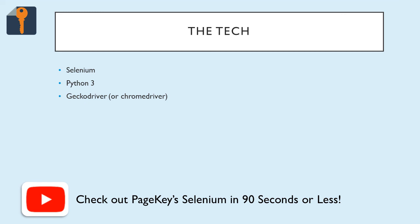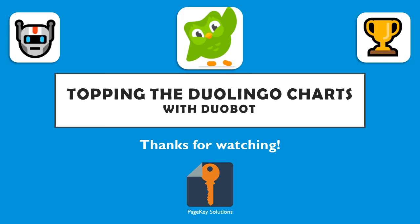That's what allows you to pop open that Firefox window and have it clicking buttons and finding things in the DOM without your input. I'll also give a shout out to our other video, 'Selenium in 90 Seconds or Less' — that's a great way to get started. Watch that video, try out the steps, see if you have any issues, and once you have Selenium up and running you can launch that browser window and try something like this yourself. Let me know how it goes and if you have any questions — I'd be happy to help. Thanks for watching!